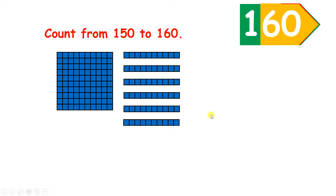So we regroup 10 units to make our sixth ten, or exchange 10 units for a ten. Counting on from a three-digit number is very similar to counting on from a two-digit number.